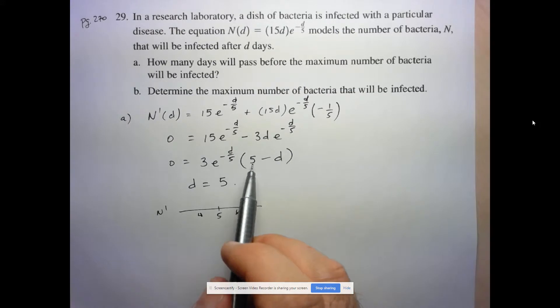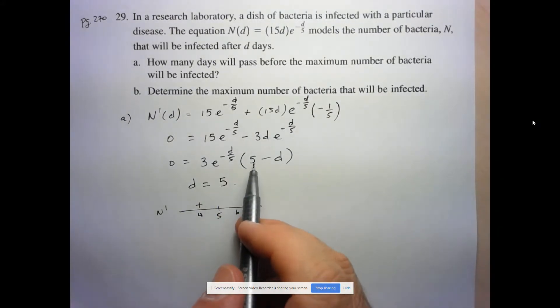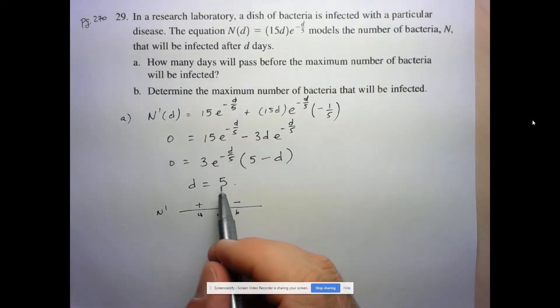When D is equal to 4, 5 minus 4 is 1, so positive. And when D is equal to 6, 5 minus 6 gives me a negative derivative. So this is indeed going from increasing to decreasing. So that is a max.